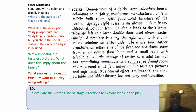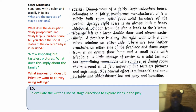Let's look at the beginning of the play — the opening where we see the stage directions. While I go through this, I want you to think about these questions: What are the purposes of the stage directions and why are they important to this play? What does the description 'fairly prosperous and fairly large suburban house' tell us about the social status of the owners? And what does 'a few imposing but tasteless pictures' imply about the family, and what impression does Priestley want to convey using setting? I'm going to read the first stage directions and then we'll discuss it.